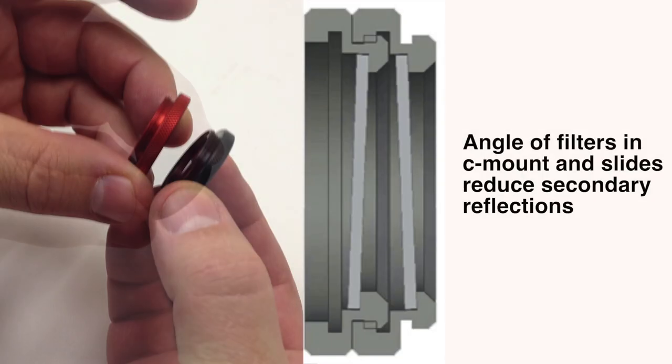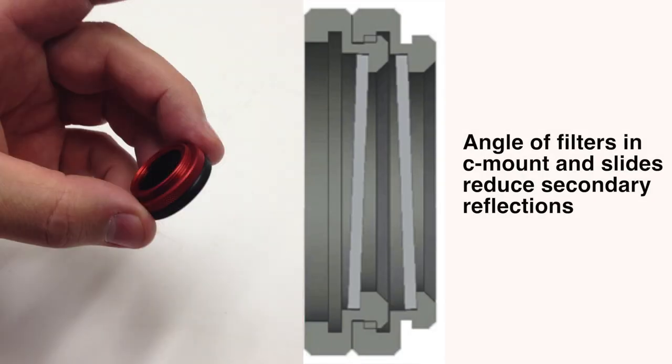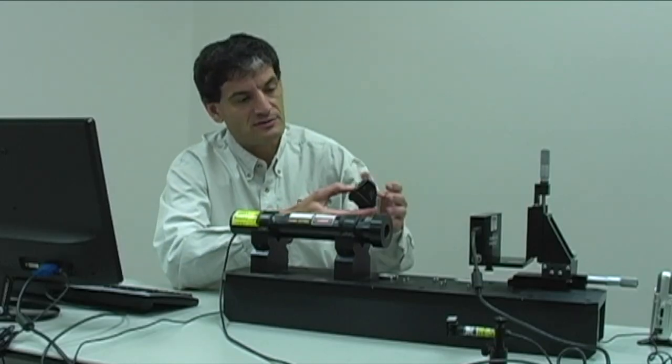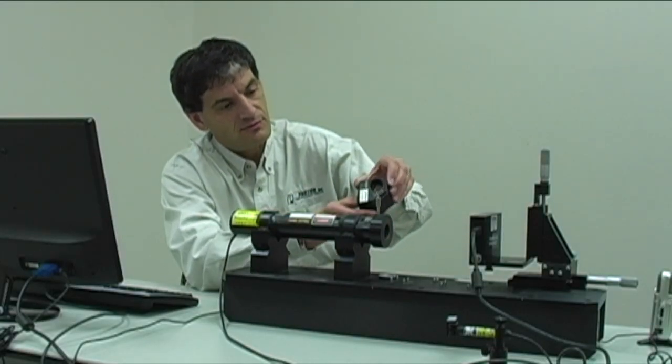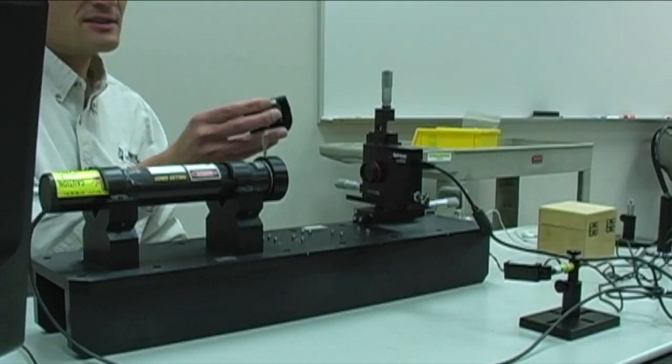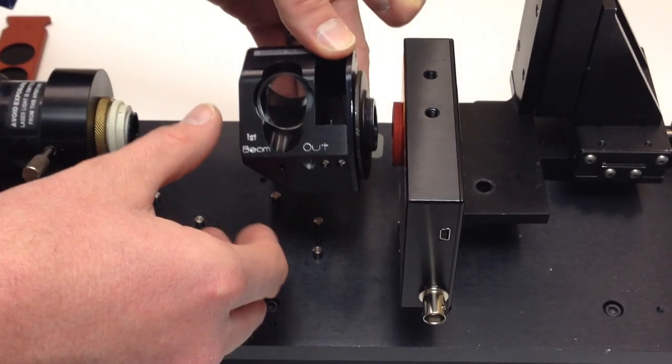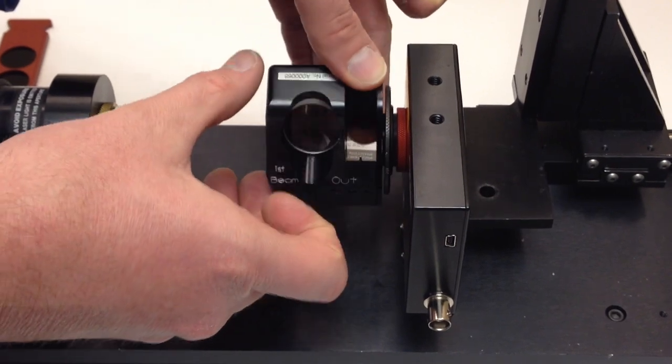So what you need to do for high power lasers is use something which has a front surface reflection. So this is the LBS 300. I'll show you how it attaches to the camera. I'm just going to screw it on here.